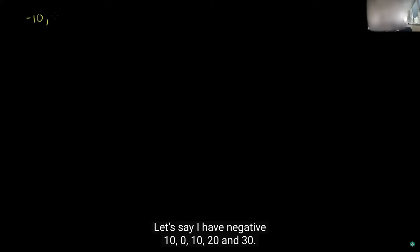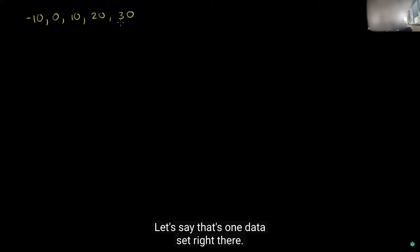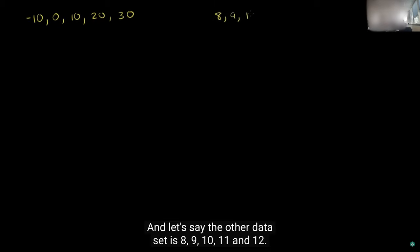So that takes us to this version, which we have a bit more time to talk about. What we're going to do in this video is to expand that a little bit to understand how spread apart the data is as well. So let's just think about this. Let's say I have negative 10, 0, 10, 20, and 30 — that's one data set. And let's say the other data set is 8, 9, 10, 11, and 12.